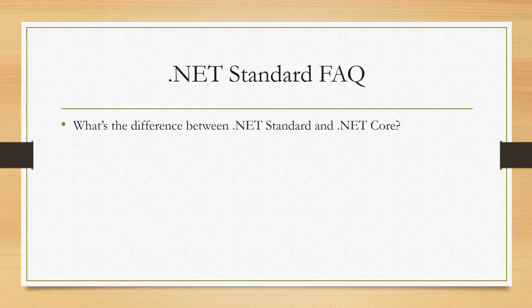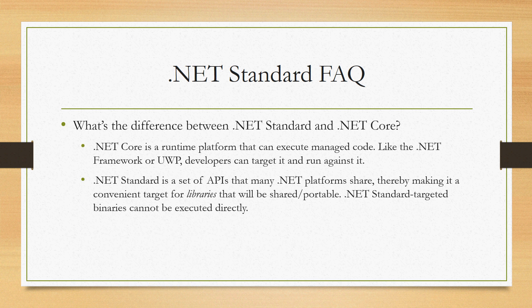A lot of people won't know what the difference is between .NET Standard and .NET Core, because these two profiles have grown up around the same time and it can be confusing. .NET Core is a runtime platform — a .NET product that will execute managed code, just like the full .NET Framework, UWP, or .NET Native. It powers ASP.NET Core and has a JIT, a GC, and an execution engine, so it runs managed code. It is a .NET platform.